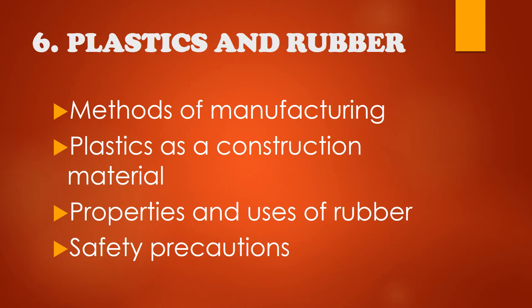Topic six covers plastics and rubber, including methods of manufacturing, plastics as a construction material, properties and uses of rubber, and safety precautions.